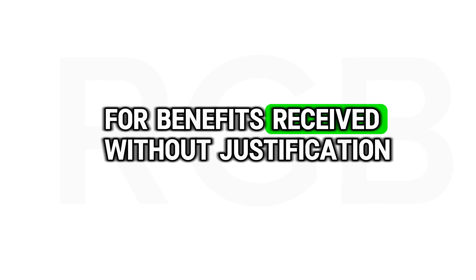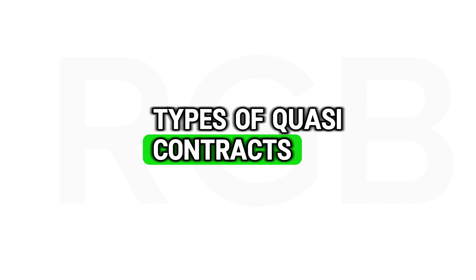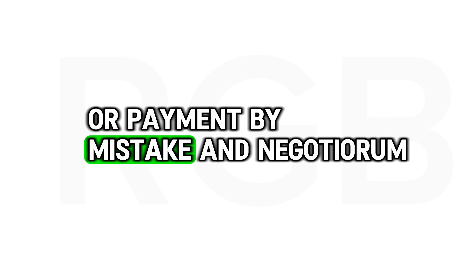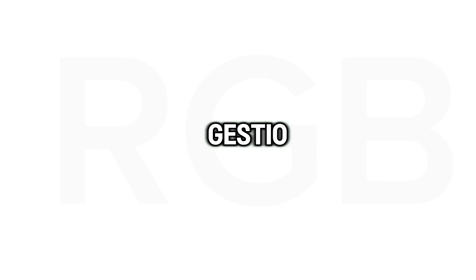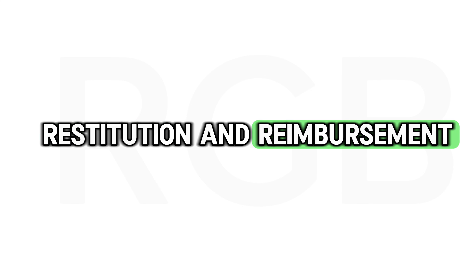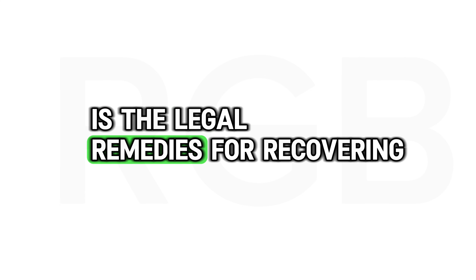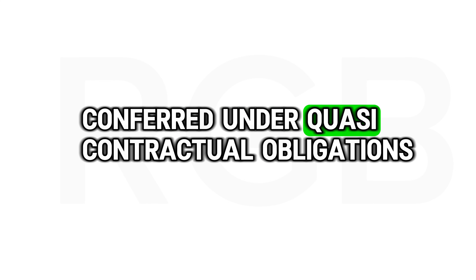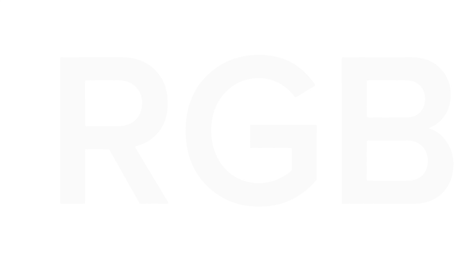Types of Quasi-Contracts: common examples include solutio indebiti or payment by mistake, and negotiorum gestio or management of another's affairs without authorization. Restitution and Reimbursement are the legal remedies for recovering benefits conferred under quasi-contractual obligations, ensuring fairness and equity between the parties.